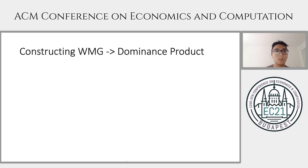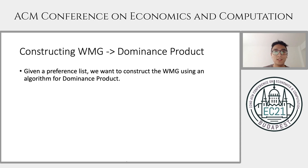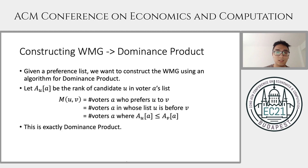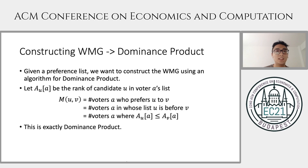In Theorem 1, we show constructing a weighted majority graph is equivalent to dominance product. In the first direction, given a preference list, we construct the weighted majority graph using a dominance product algorithm as a black box. Let r_{ua} be the rank of candidate u in voter a's list. Then M_{uv} equals the number of voters a where r_{ua} ≤ r_{va}, which is exactly the form of the dominance product. So using a black box for dominance product, we can compute the matrix M and then easily compute the edge weights of the weighted majority graph.